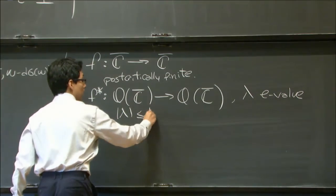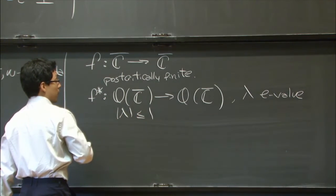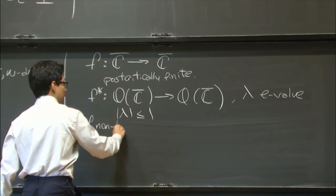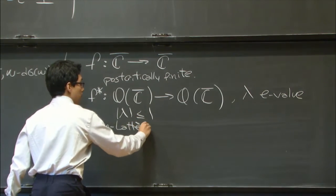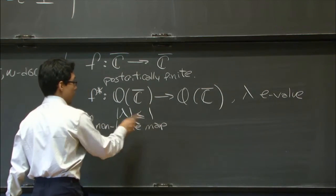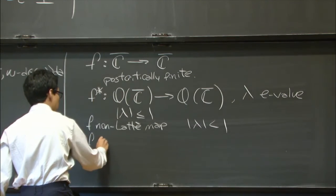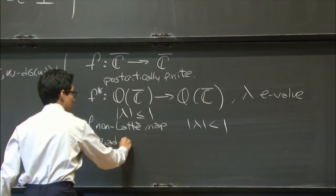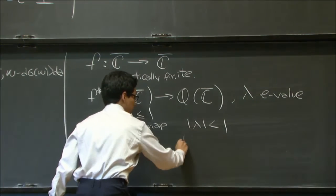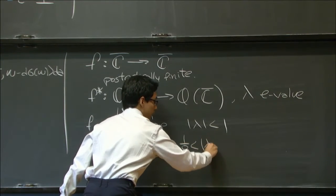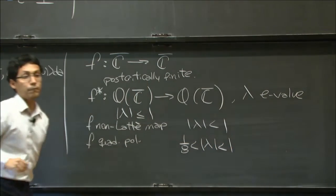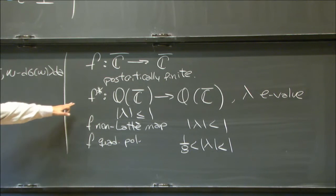So these are certain facts that are known for this map. You should think about this map as the derivative of the skinning map. In general, all the eigenvalues are going to be less than or equal to 1. If f is a non-Lattès map, again, I'm not going to define precisely what it is, I'm just going to name it. This is going to be a contraction. And in particular, if f comes from a quadratic polynomial, there is a result about spectral gap. All your eigenvalues need to be in absolute value between 1 over 8 and 1.